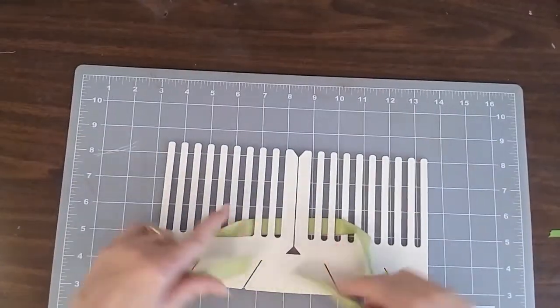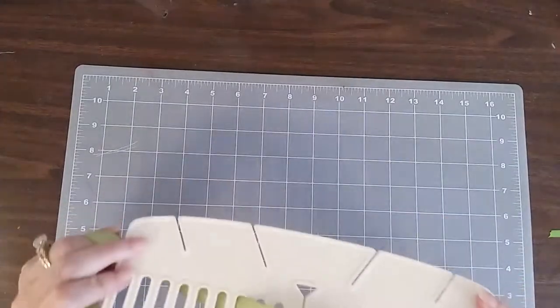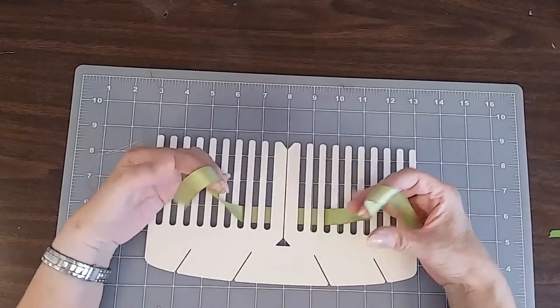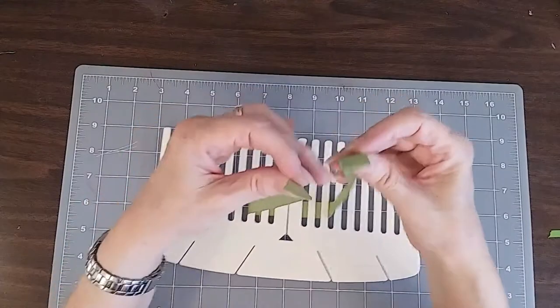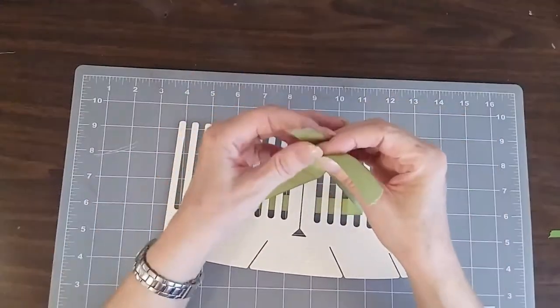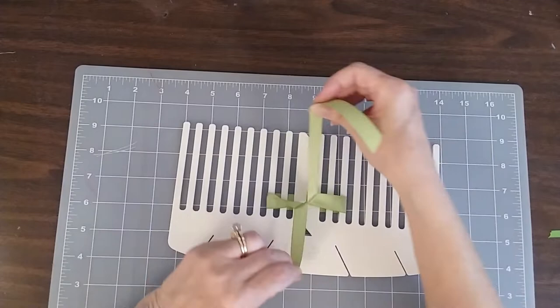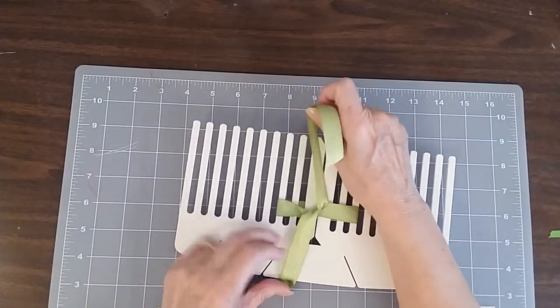So I threaded my ribbon along the back. Make sure your tails are kind of even there. Crisscross them over and then cross them so they're in a vertical position.